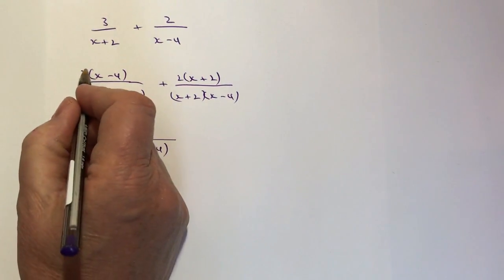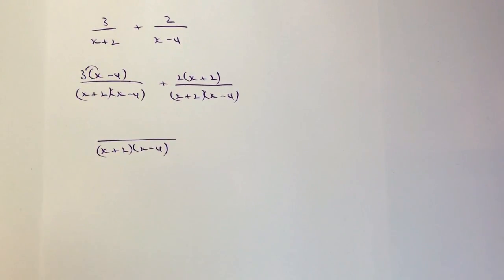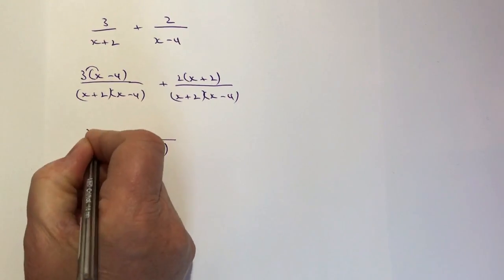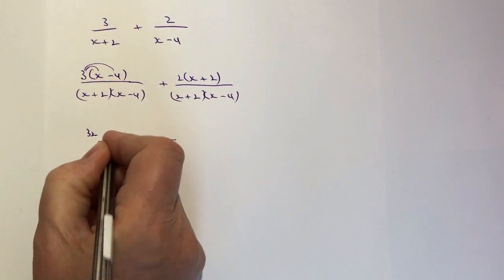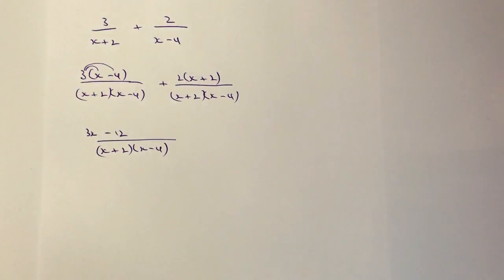So I've got 3 times x is 3x, and then 3 times -4 is -12. Just be very careful about the negative numbers that you sometimes get with these sorts of calculations.